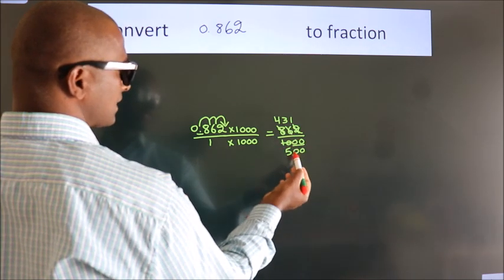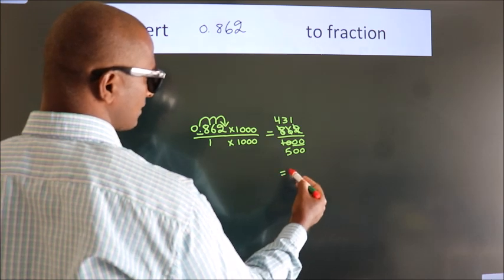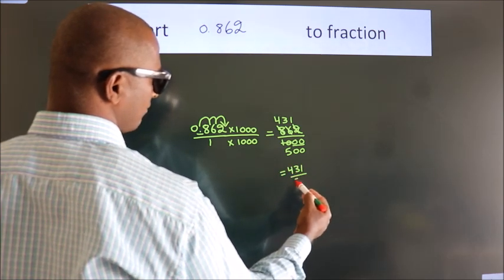Further cannot be simplified. So our fraction is 431 by 500.